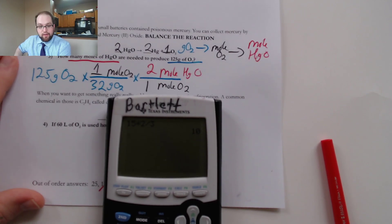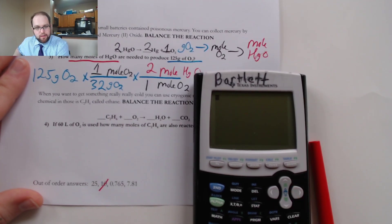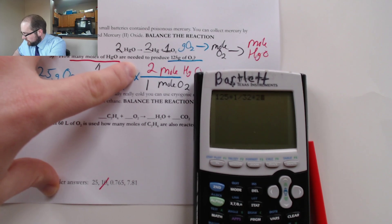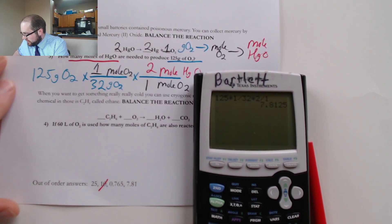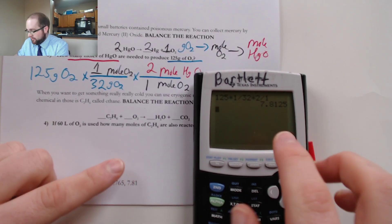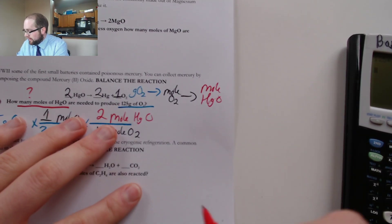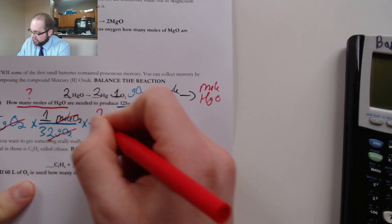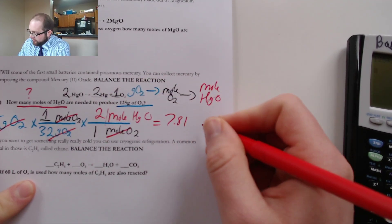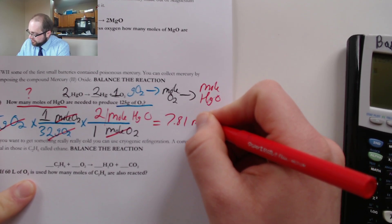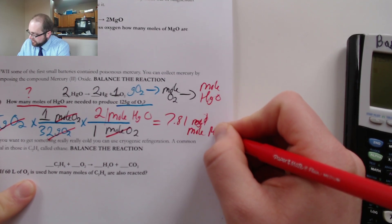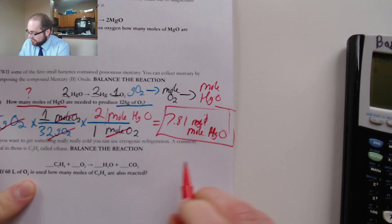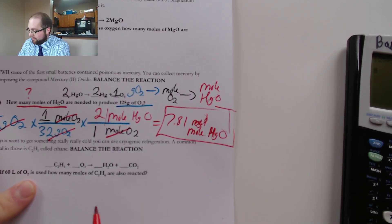So the final math in my calculator is going to look a little bit like this. I'm going to take 125 times 1 divided by 32 times 2 divided by 1 and we get a final answer of 7.8125 that matches our answer of 7.81 right down here at the bottom. Don't forget our new units because grams of O2 cancel, moles of O2 cancel, left with moles of HgO, moles of HgO is our final answer.